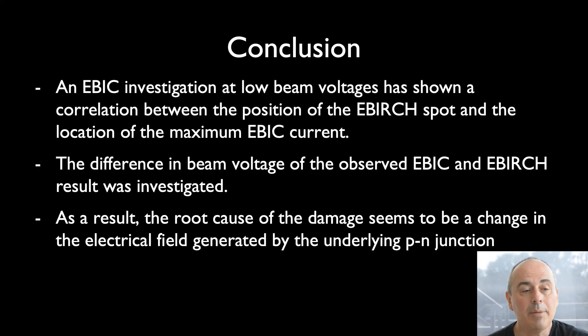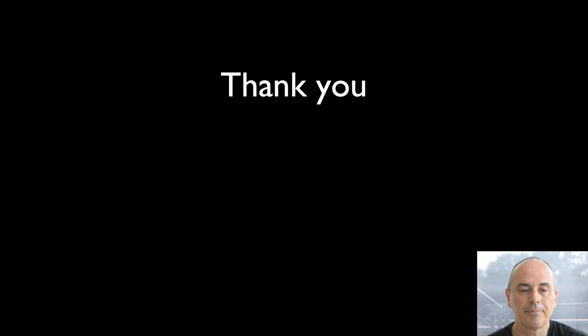Conclusion: An EBIC investigation at low beam voltages has shown a correlation between the position of the EBIRCH spot and the location of the maximum EBIC current. The difference in beam voltage of the observed EBIC and EBIRCH result was investigated. And as a result, the root cause of the damage seems to be a change in the electrical field generated by the underlying p-n junctions. Thank you for your attention.